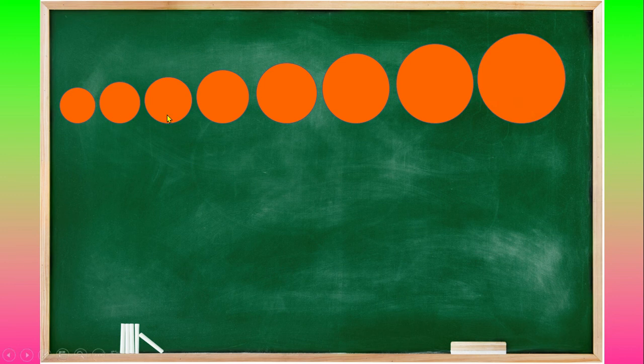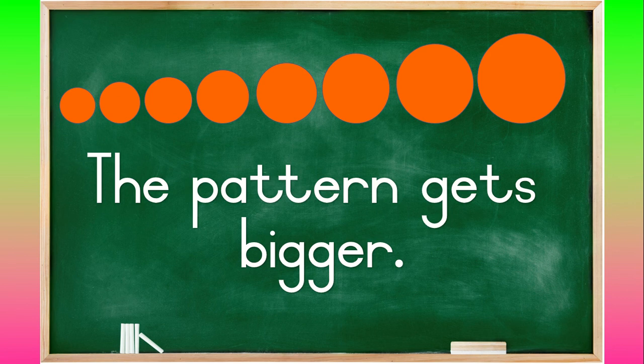Now we look at our second pattern. Let's see how it behaves. This pattern is constantly getting bigger. So it's circles, every time it's a circle, but it just gets a little bit bigger. So this pattern gets bigger.